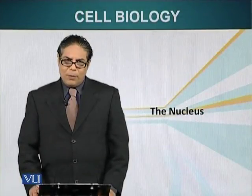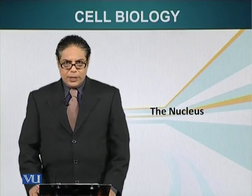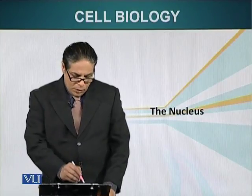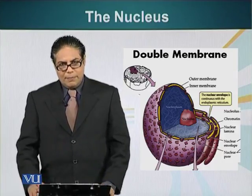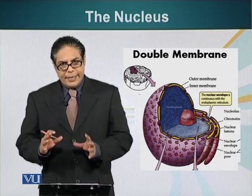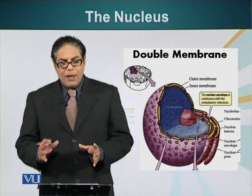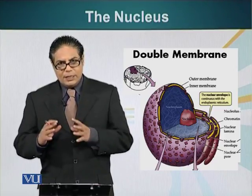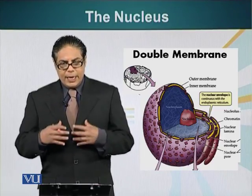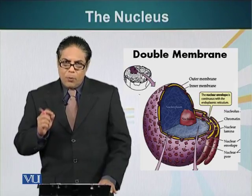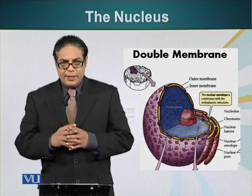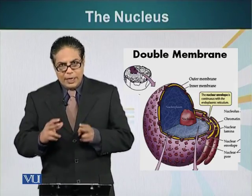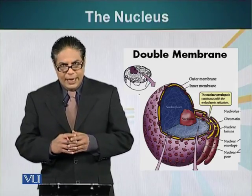Now we will talk about the largest organelle in eukaryotic cell, the nucleus. In the previous module I introduced the nucleus as the governor house of the cell. Nucleus dictates the function of a cell. Function of a cell is dependent upon the proteins it has. The recipes of all the proteins are contained in the nucleus in the form of genetic code, which is made up of DNA.